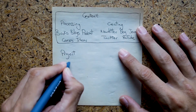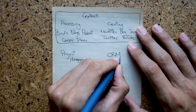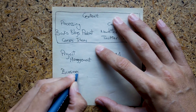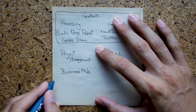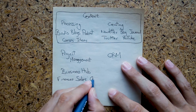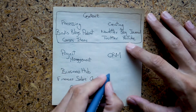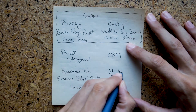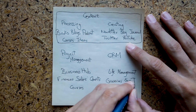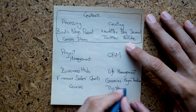Then, away from content: my project management, my CRM or how I manage my relationships, my business hub — where I have all my finances, my sales, my coaching clients, and the courses I'm developing — and my life management, which includes my groceries, gym tracker, trip planning, and everything related to my personal life.